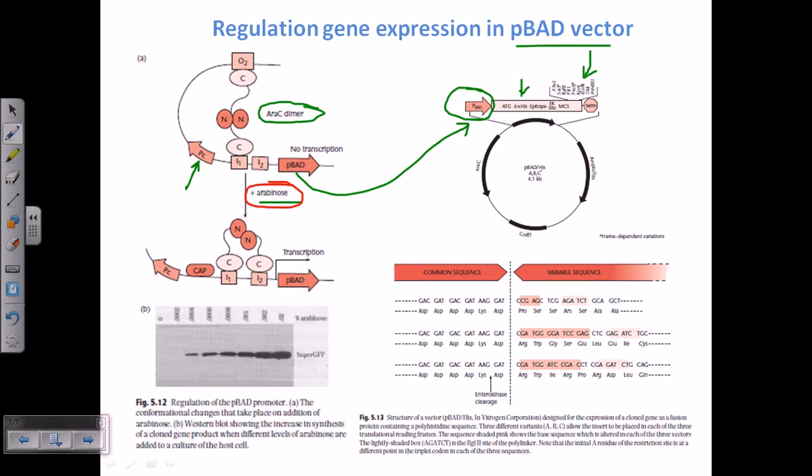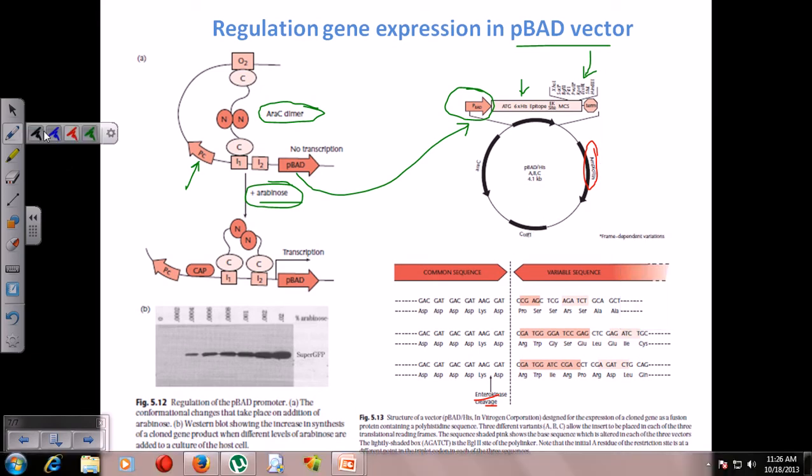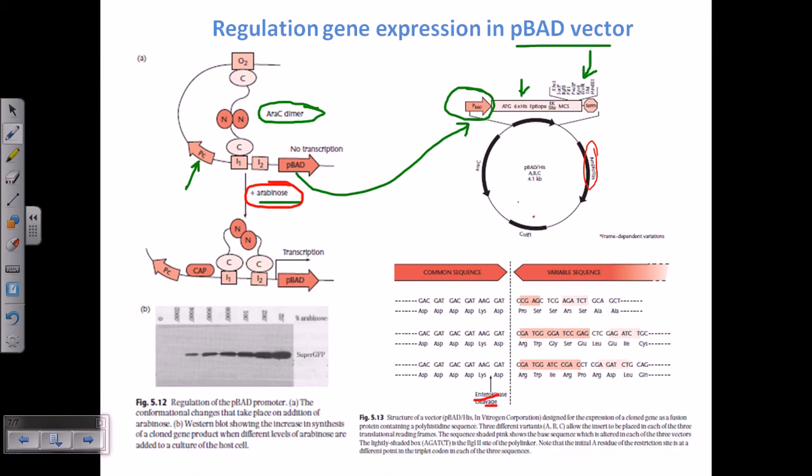So in the P-Bad vector, we are having this particular region, P-Bad, then our desired gene sequence, then the site for enterokinase cleavage and also the multiple cloning site and all these things, histidine tags and all these things. We are also having selectable marker, which is ampicillin here. We are also having origin of replication somewhere here. We are also having origin of replication and also having the AraC, because AraC is the most important molecule to control and regulate the expression of this P-Bad promoter in this case.